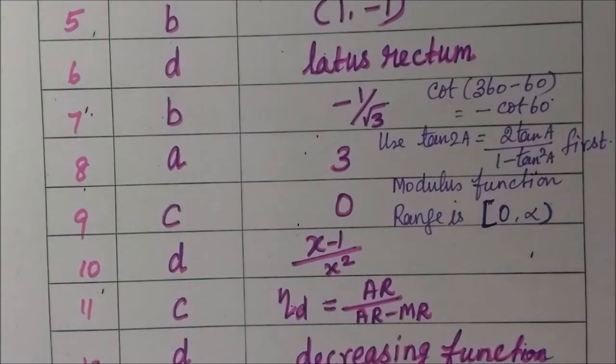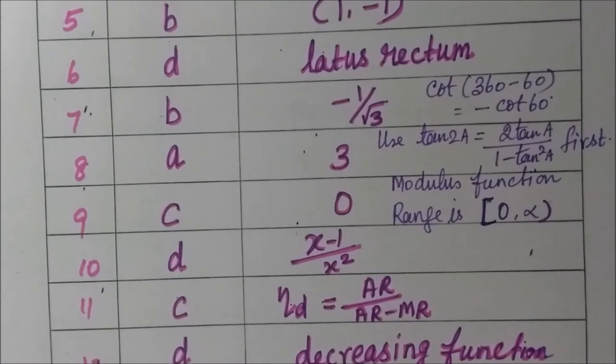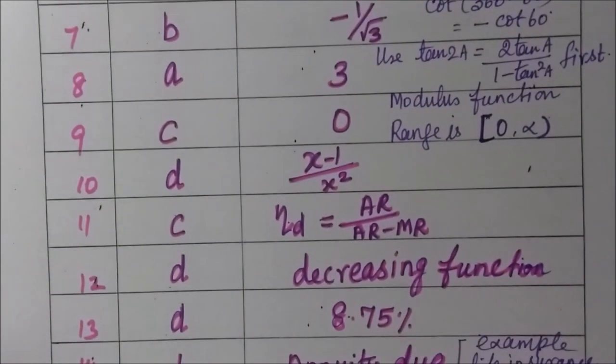Question 9: option c, 0. The signum function's range is minimum value minus 1. Question 10: option d, x minus 1 by x squared.